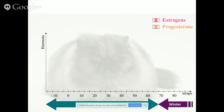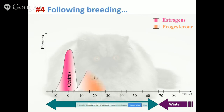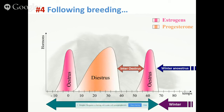From a hormonal standpoint, what happens after breeding? If the female was bred enough and ovulation occurred, after ovulation she will secrete progesterone. The ovarian follicles — the structures on the ovaries that contain the eggs — will turn into what we call the corpora lutea, and those corpora lutea produce progesterone. If she ovulated but did not get pregnant — due to poor sperm quality or any other reason — she will secrete progesterone for roughly 45 days, and then progesterone secretion will cease.